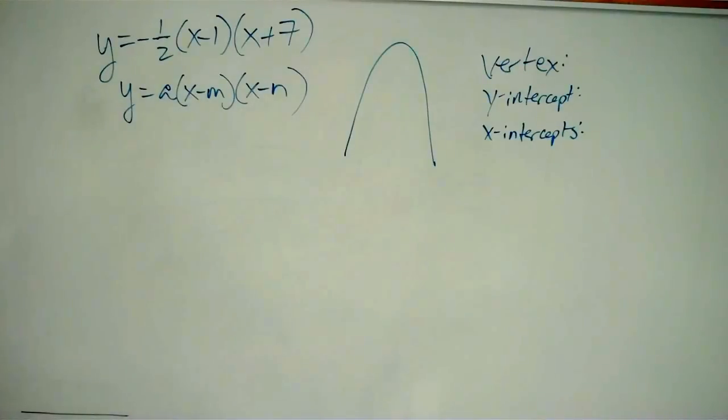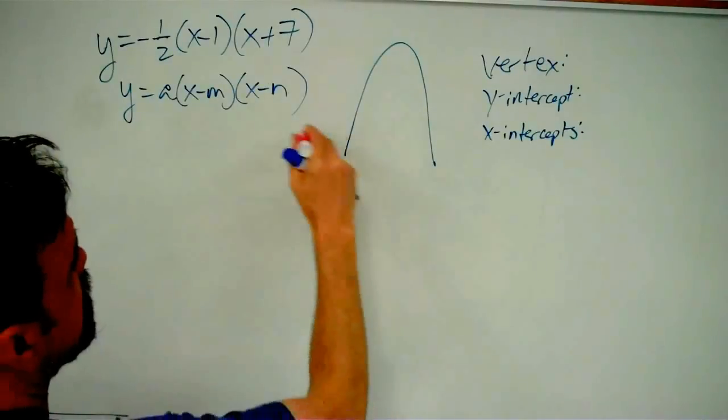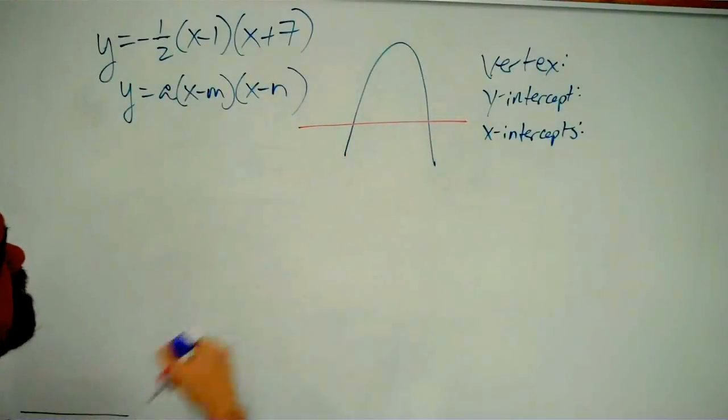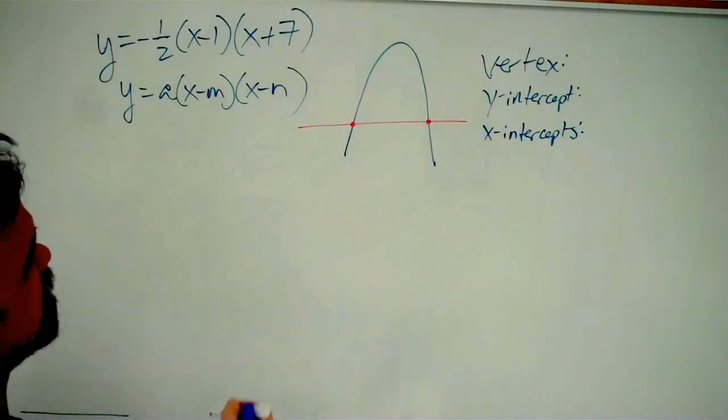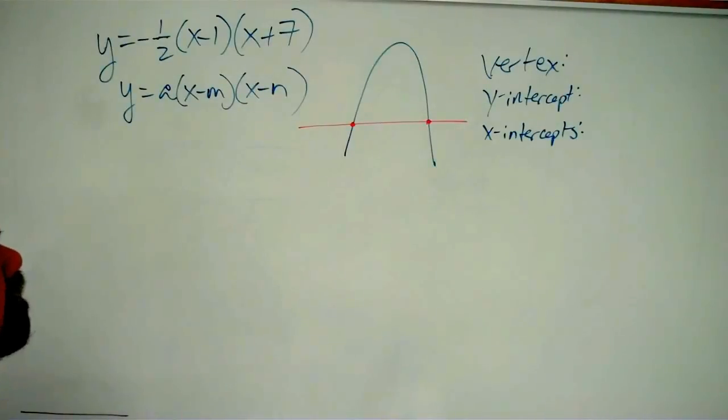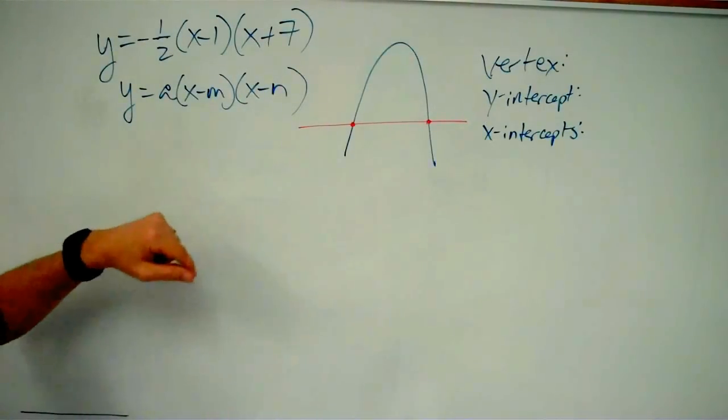And like I said, this is written in something that is sometimes referred to as intercept form, and that's because if this is our x-axis, we already know these two points here. It's the two points where the value of x will make y equal to zero.